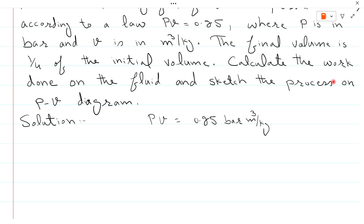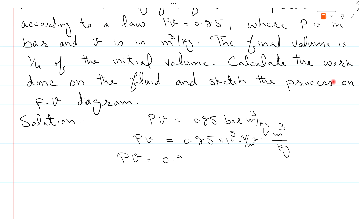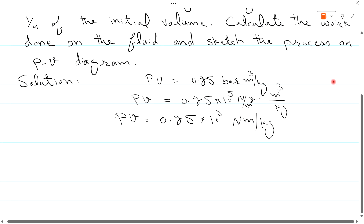This gives PV = 0.25 bar·m³/kg. Since 1 bar = 10⁵ N/m², this converts to PV = 0.25 × 10⁵ N·m/kg, representing the work units for this compression process.